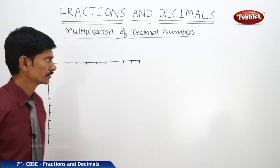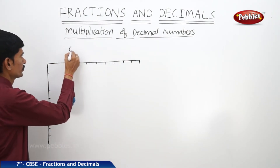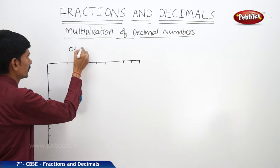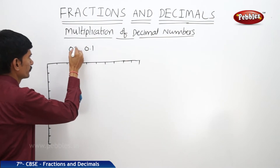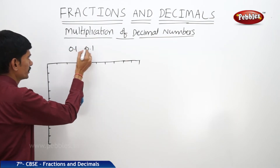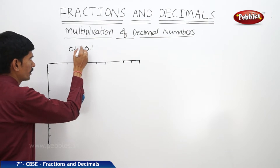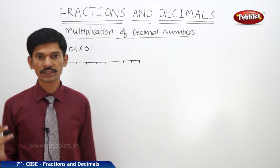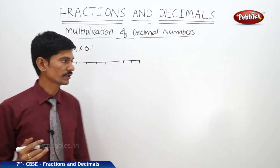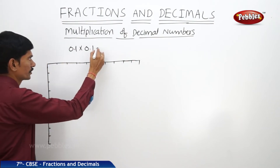First, let us multiply two decimal numbers 0.1 and 0.1. So, 0.1 is a decimal number and again 0.1 is also a decimal number. Now, let us multiply these two decimal numbers and we will find their product.